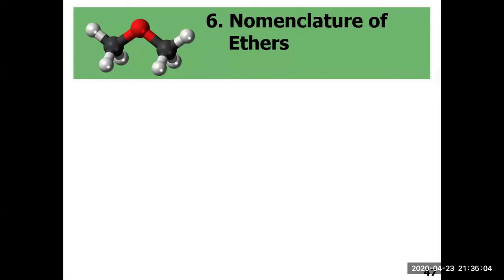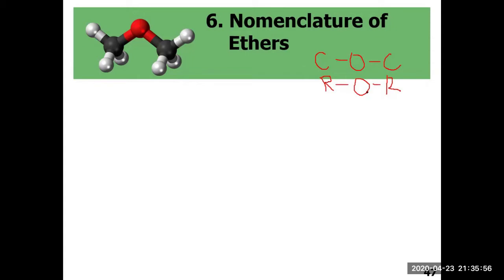Welcome back to our organic chemistry online lectures. This time we're going to look at how to give names for ethers. Ethers are organic molecules having this type of connectivity: a carbon bonded to an oxygen, which is also bonded to another carbon. These carbon atoms can be imagined as alkyl groups. If we have the same alkyl groups bonded to the oxygen atom, we call them symmetrical ethers; if we have unlike alkyl groups bonded to the oxygen atom, those are called unsymmetrical ethers.